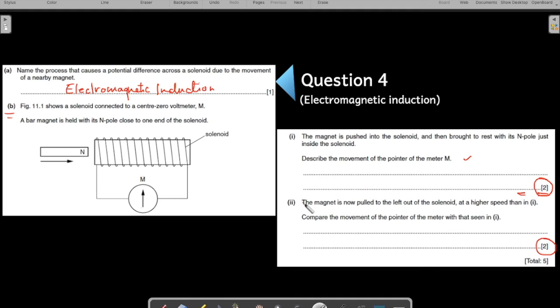Now the next part. The magnet is now pulled to the left of the solenoid. Now you are pulling the magnet towards the left. Earlier you were making the magnet enter the solenoid. Now the motion is opposite. And at the same time it is happening at a higher speed. Higher speed. Higher speed than in the part one of the question. Compare the movement of the pointer of the meter with that seen in one. Compare the movement. Again two mark question. They are looking for two points.